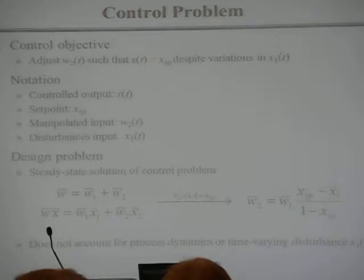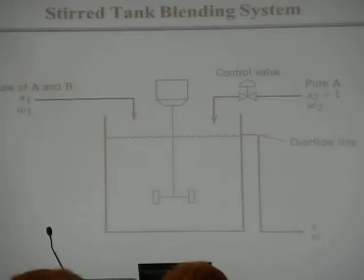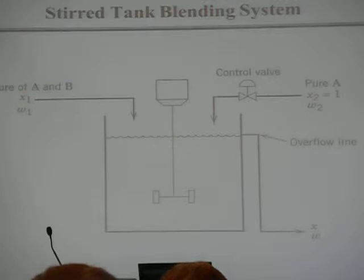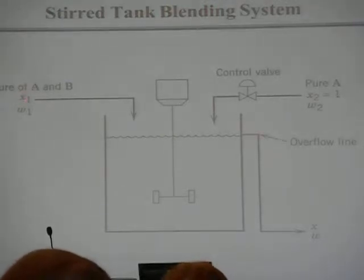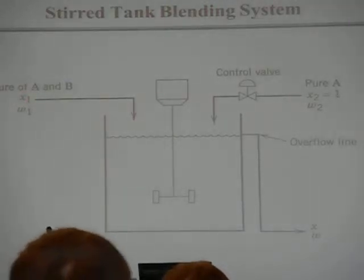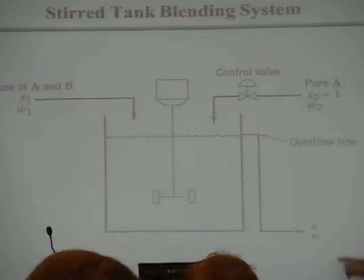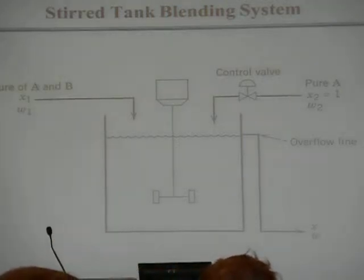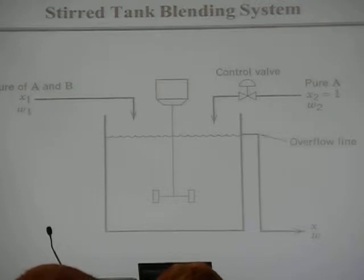I want this to equal a desired value, despite the fact that the composition coming in the other stream might vary. So the idea here is, if this mass fraction drops in stream B — X1 drops — this is going to get mixed up, and eventually X here is going to drop. Then I'm going to respond by adding more pure A to bring X back up.